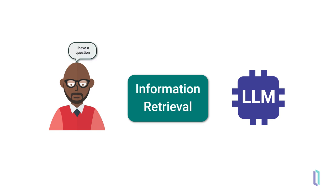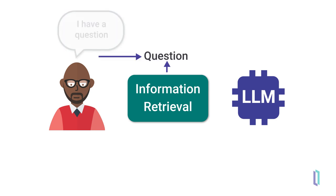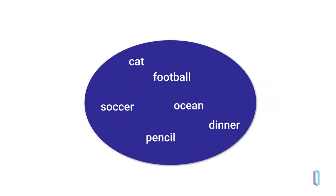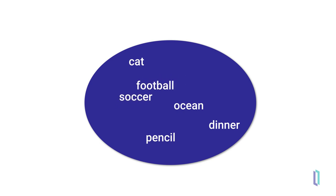To start, a user enters a question or prompt. Before this prompt is sent to an LLM to generate an answer, relevant information is retrieved to supplement the data that the LLM was trained on. Information is stored in a vector format, enabling relevant data to be retrieved from large datasets more efficiently. It also allows your application to find information based on semantic meaning, rather than classic keyword or text search.